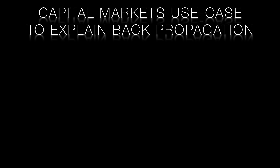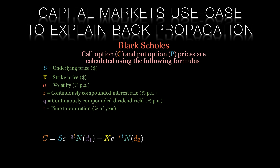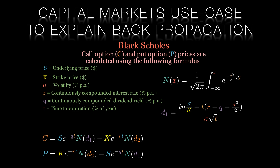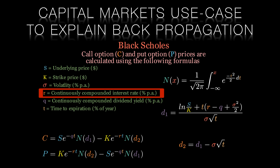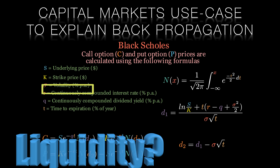For this backpropagation video, we'll take a brief departure from computer vision and use options pricing as our use case. Options have long been priced using parametric algorithms, such as the Black-Scholes equation. These parametric equations suffer from some fundamental flaws, which often result in an observed options price being very different from the price predicted by the parametric equation. These flaws result from implicit assumptions — including stationary interest rates and stationary volatility.